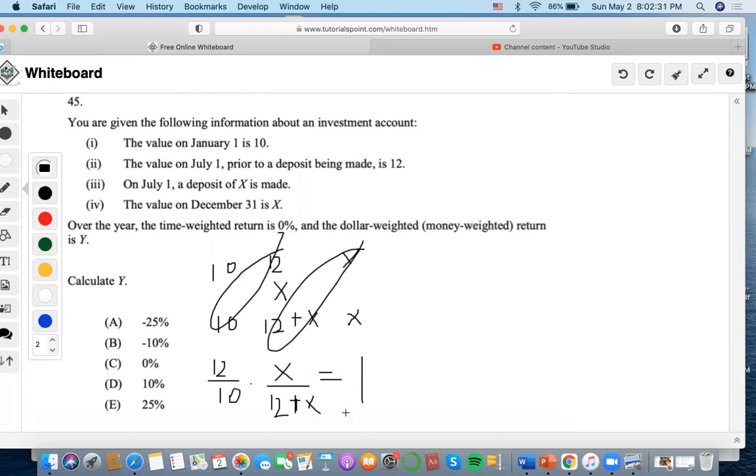Now we're going to solve this to find X. I'm going to do 12 divided by 10, which is 1.2, then 1 divided by 1.2, which is 0.8333.